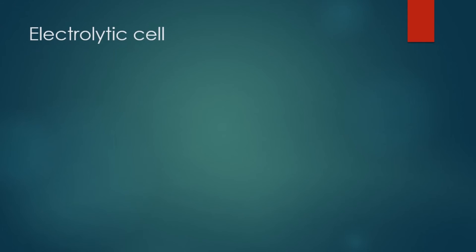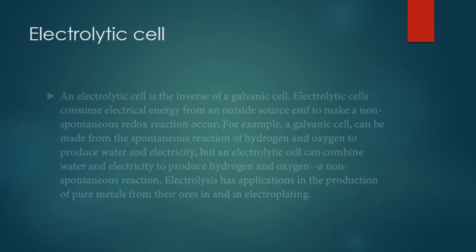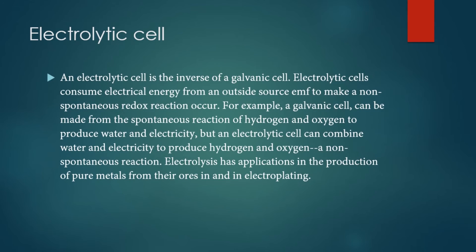The second type of electrochemical cell is the electrolytic cell. Unlike galvanic cells, electrolytic cells consume electrical energy from an outside source to drive a non-spontaneous redox reaction. For example, a galvanic cell can be made from the spontaneous reaction of hydrogen and oxygen to produce water and electricity, but an electrolytic cell can combine water and electricity to produce hydrogen and oxygen in a non-spontaneous reaction.